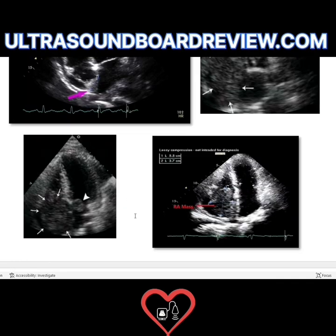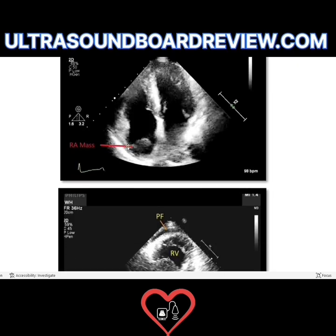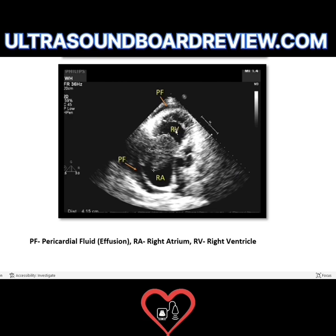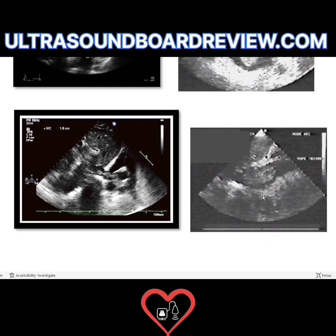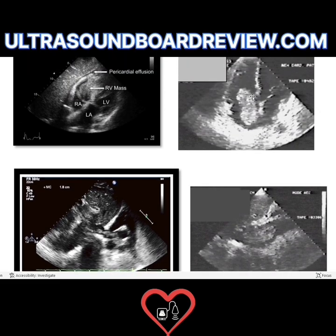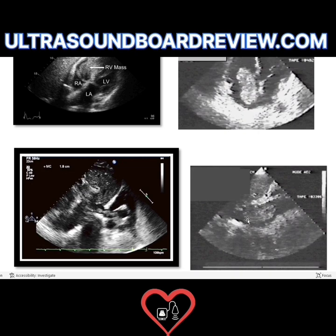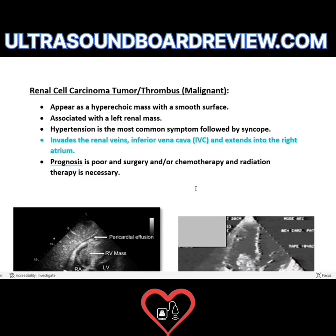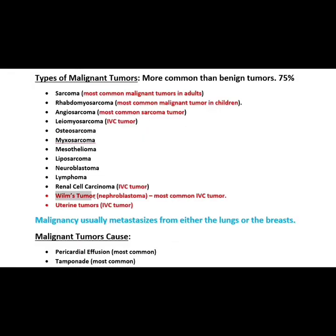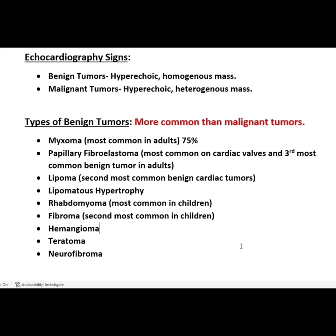Lymphomas are typically on the right side — this one appears right between the right atrium and right ventricle. Also note the pericardial effusion. Renal cell carcinoma is an IVC tumor — you'll see it coming in through the IVC into the right atrium and then invading the right ventricle. The most common IVC tumor is a Wilms tumor, or nephroblastoma.